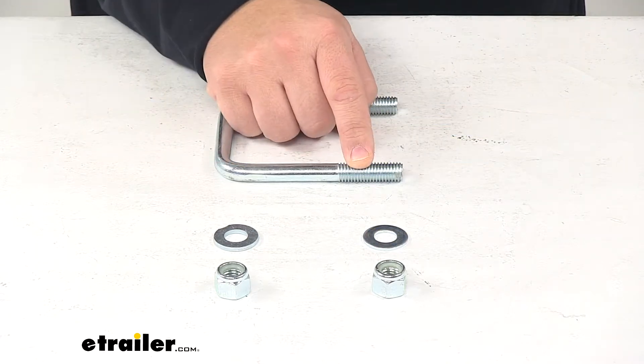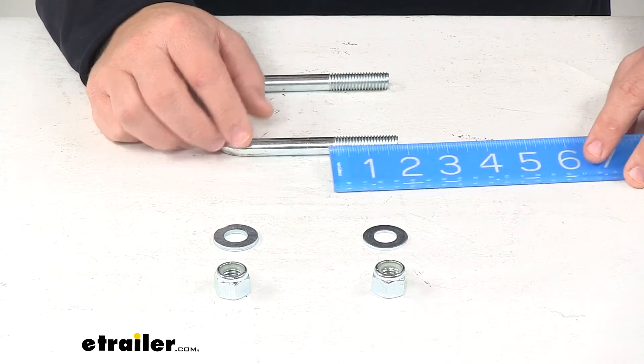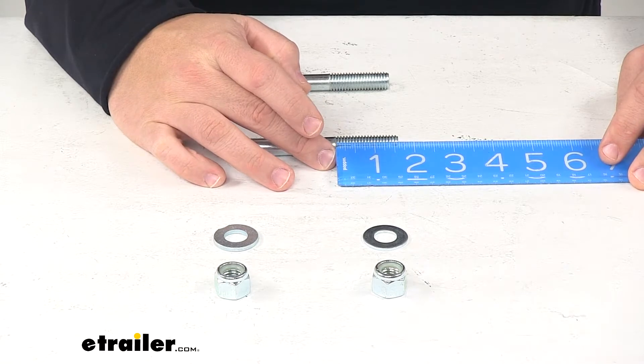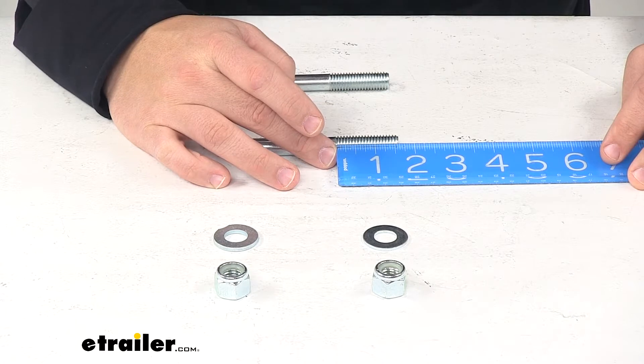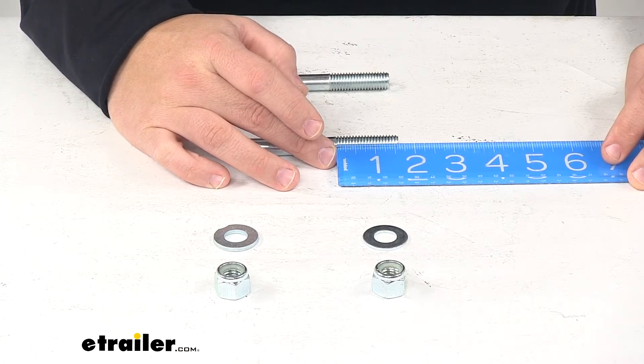The bolt size is a half inch by thirteen, and the thread length measures about one and nine sixteenths to one and five eighths inches.